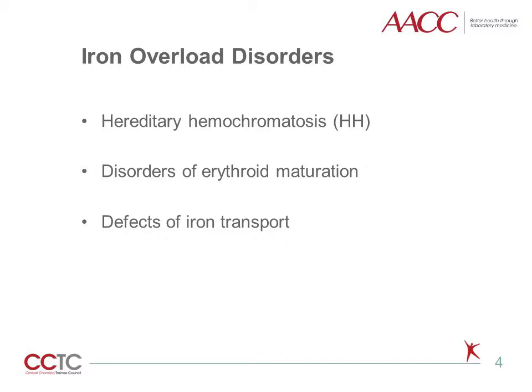Some common mechanisms include increased iron absorption, decreased iron utilization, and the combination of the two. In the next few slides, we'll briefly go over three major categories of iron overload disorders, namely hereditary hemochromatosis, disorders of erythroid maturation, and defects of iron transport.